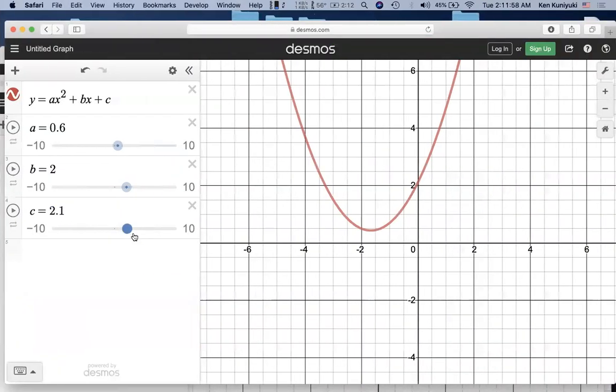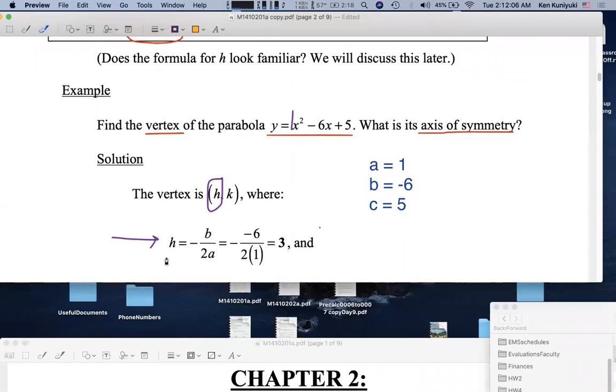Remember, when we adjust c, that does not affect the x-coordinate of the vertex. It only affects the vertical shifting. So this formula for the x-coordinate of the vertex, h, doesn't even care what c is. It's only dependent on a and on b. And remember, if a is 0, we get a line.